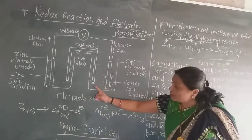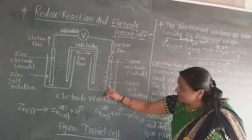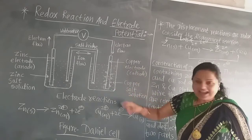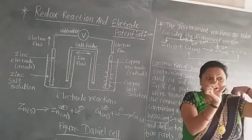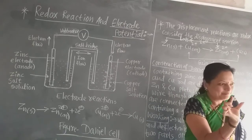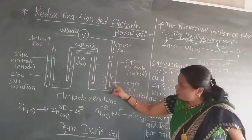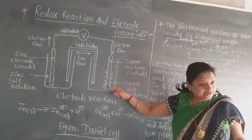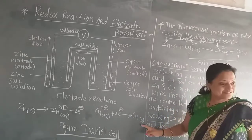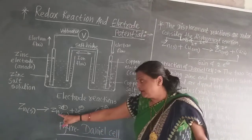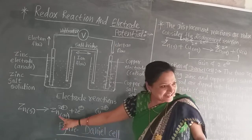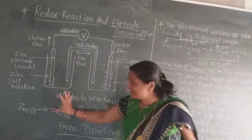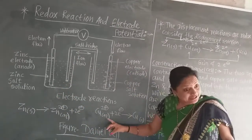The Cu²⁺ ions from copper sulphate solution get deposited on the copper electrode. The copper electrode increases in breadth because it is already copper and more copper atoms are deposited on it. You know that donation of electrons is oxidation. Here, in this half-cell there is an oxidation reaction, and gain of electrons is reduction.